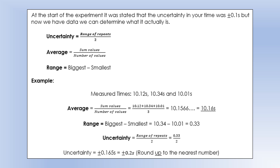If we have repeat readings from our experiment, we don't have to just guess at what the uncertainty is. With repeat readings we can actually calculate the uncertainty, and we do it using the range of our repeat readings. We take our biggest repeat reading, subtract the smallest repeat reading to give us our range, then divide that by 2 to give us our uncertainty.